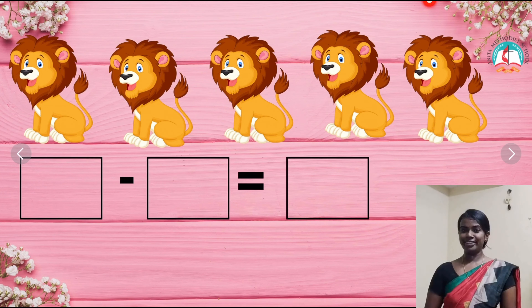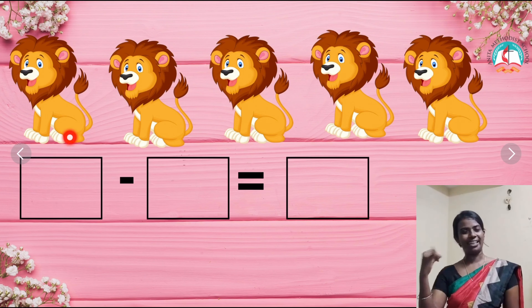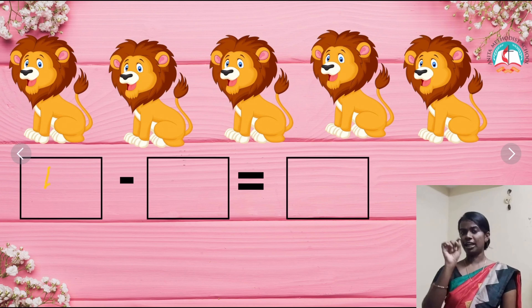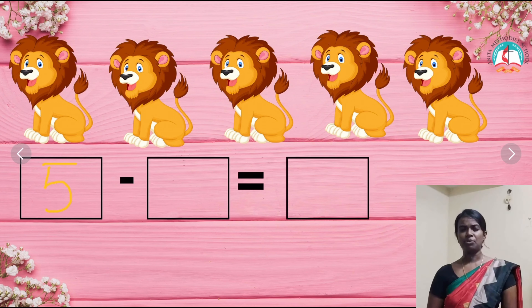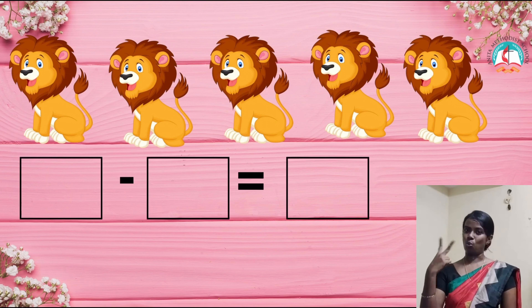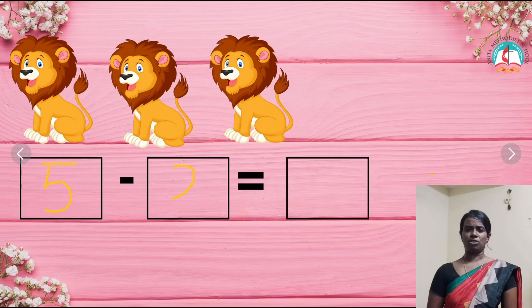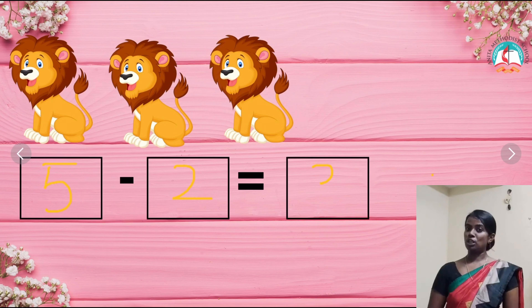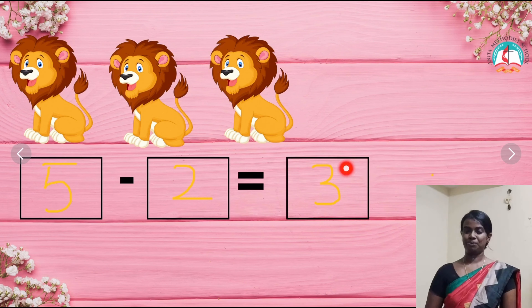Now the first one, subtraction using pictures. What is this children? Yes, we have lions in the picture. Shall we count the lions? 1, 2, 3, 4 and 5. We have 5 lions. I am going to write the number 5 inside the first box. Now I am going to take away 2 lions. So 1 and 2. I am going to write the number 2 in the second box. How many lions are left children? Shall we count the lions? 1, 2 and 3. So when you subtract 5 minus 2, the answer is 3.